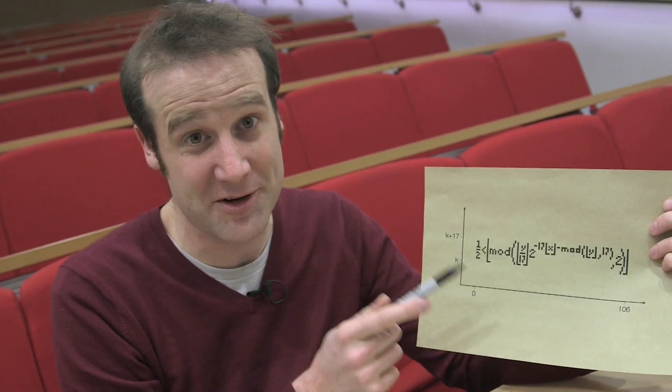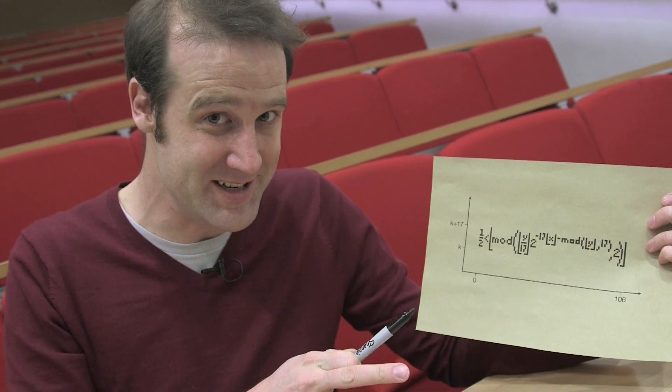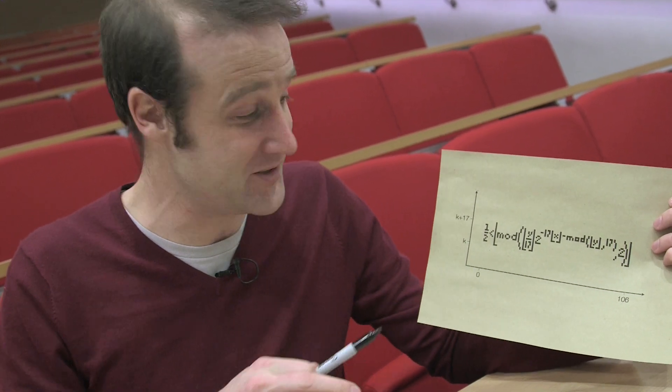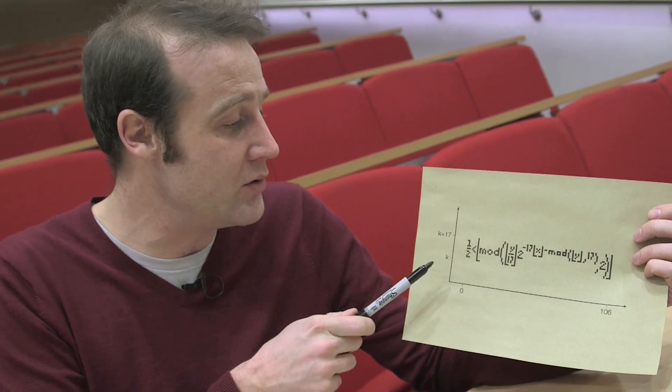What's actually amazing about Tupper's self-referential formula is not that it plots itself, it's that it plots everything. As you go up the y axis, it plots every single 106 by 17 grid of white and black pixels, so anything that fits in that grid is somewhere on this plot. So not only is Tupper's formula in the plot, but also every other formula you can fit into that size. In fact I found a different value of k.